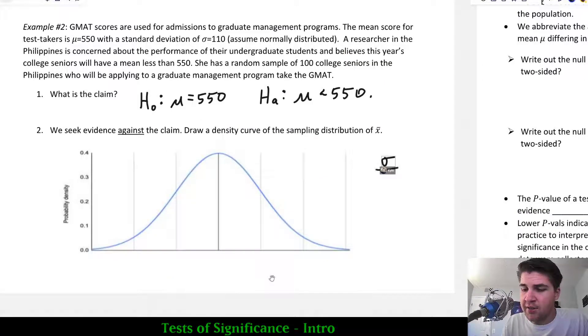The standard deviation of the sampling distribution is the original standard deviation of the population divided by the square root of the sample size. So since we have a sample of size 100, that will reduce our standard deviation by a factor of 10 because square root of 100 is 10. So I'm going to get 110 divided by 10, which is of course 11.